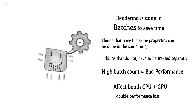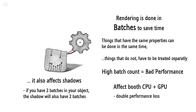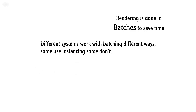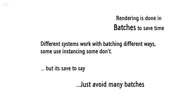However, it's even worse — the batching also affects shadow rendering. So if you have two batches in your object, you will also have two batches in the shadow. A neat way of looking at it is that each material on an object casts its own shadow. It's worth noting that different systems work with batches in different ways, some with instancing and the possibility of merging batches of the same type, but it is safe to say that many batches is something we need to avoid.